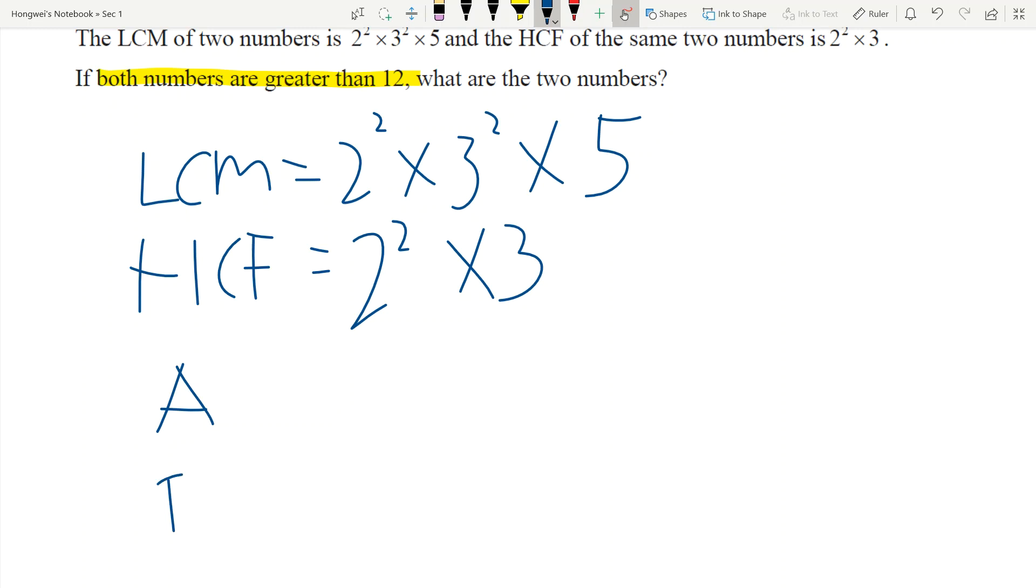Then I will look at, first, the higher power among the two is 2² and the lower power among the two is also 2². So it means that both of my numbers will have 2² in it, because remember that the LCM is the higher power.